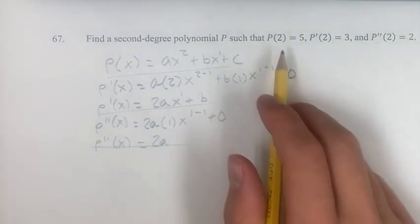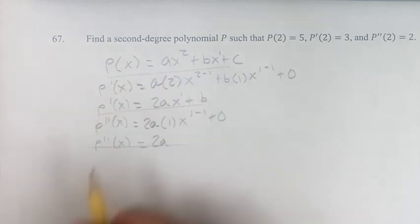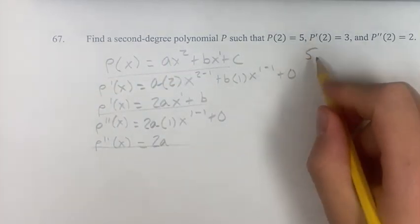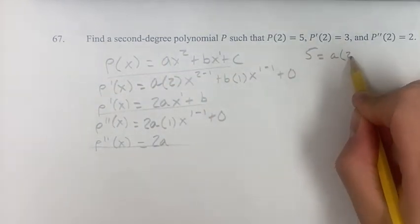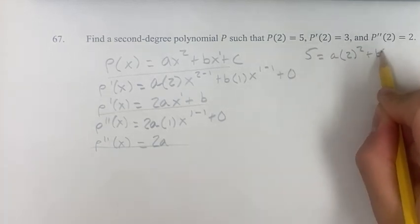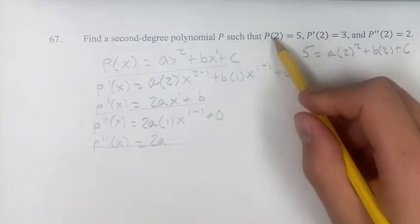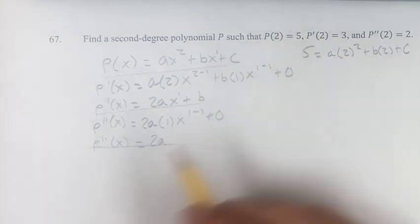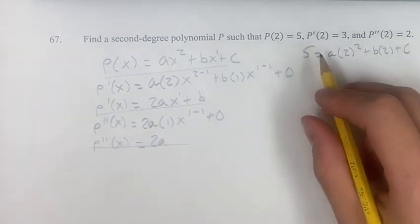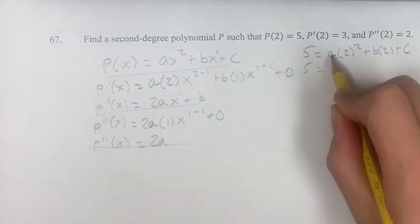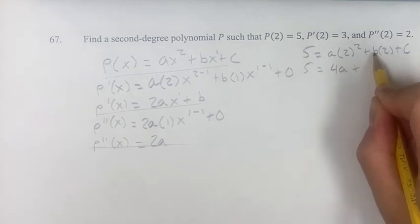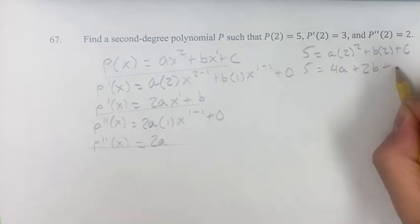Plugging that in to these, if we know that P of 2 is 5, therefore we know 5 is equal to A times 2 squared, plus B times 2, plus C. We can do this by just plugging in 5 for 2, 5 for Y, and 2 for X. 5 is equal to 2 squared is 4A, plus 2 times B is 2B, plus C.